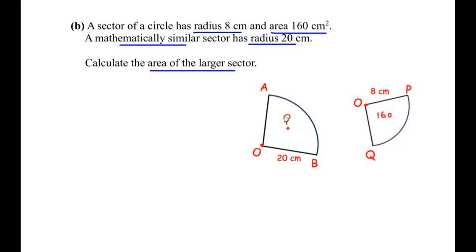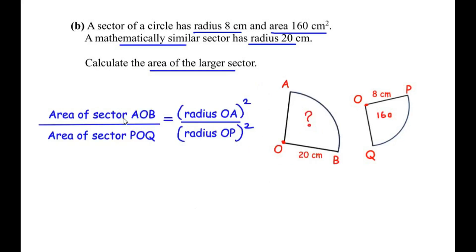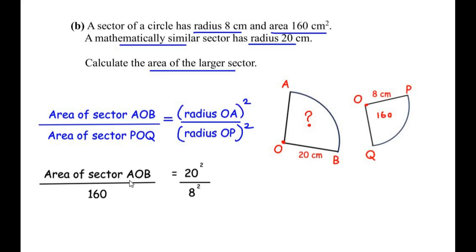Since the two shapes are similar, the relationship between their areas and radii is: area of the larger sector AOB over area of the smaller sector POQ equals the square of radius OA over the square of radius OP. Substituting: area of AOB over 160 equals 20 squared over 8 squared.